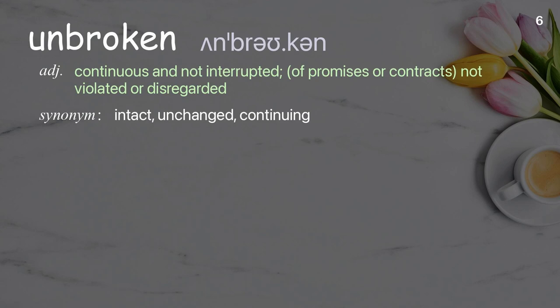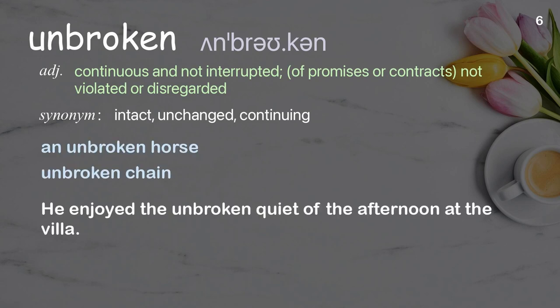Unbroken: continuous and not interrupted; of promises or contracts, not violated or disregarded. Examples: an unbroken horse, unbroken chain. He enjoyed the unbroken quiet of the afternoon at the villa.